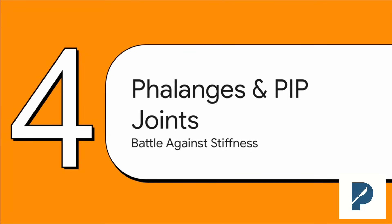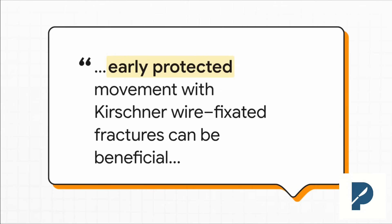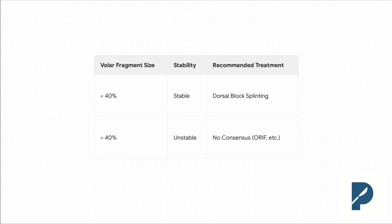Moving further down to the phalanges and PIP joints — with these injuries, the enemy has a name, and that name is stiffness. The old way was: fix the bone, immobilize it, wait for it to heal. But just like with flexor tendon repairs, early protected movement is hugely beneficial. Your fixation isn't the end of the story — it's the beginning. You're creating a stable construct so the hand therapist can get that finger moving safely. For dorsal PIP fracture dislocations, the decision-making hinges on the size of that volar articular fragment. Less than 40% of the joint surface — usually stable, manage with a dorsal block splint. More than 40% — the joint is unstable, and you'll see people do ORIF, extension block pinning, even volar plate arthroplasty. It's a real surgical challenge.